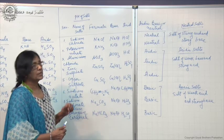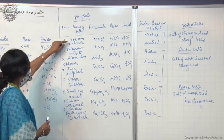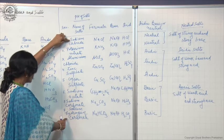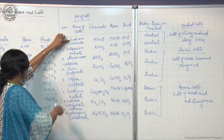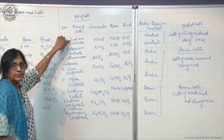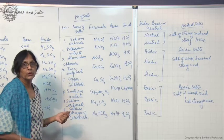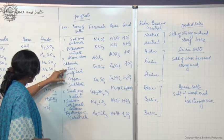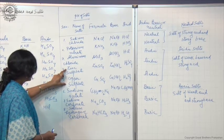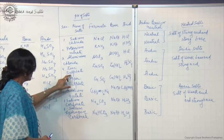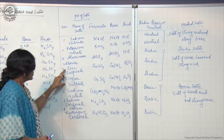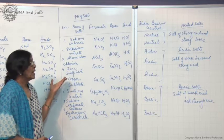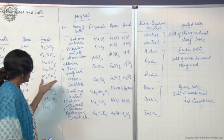We can also observe that sodium chloride, sodium acetate, sodium carbonate, and sodium hydrogen carbonate all have sodium in common — so these form the family of sodium salts. Similarly, potassium sulphate, sodium sulphate, calcium sulphate, magnesium sulphate, and copper sulphate all have sulphate in common — so this is a family of sulphates.